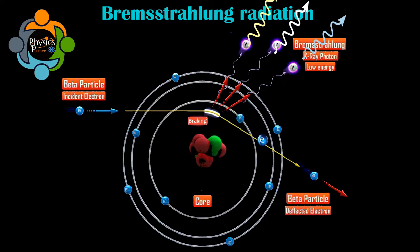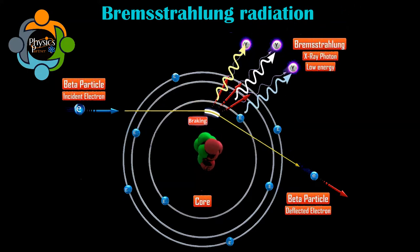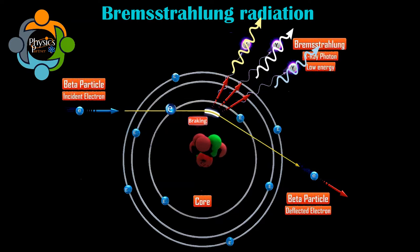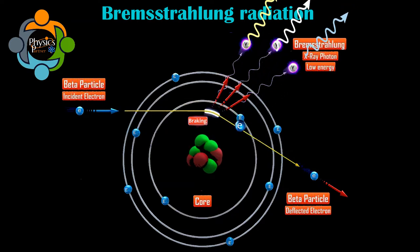Bremsstrahlung radiation is a type of electromagnetic radiation emitted when a charged particle, upon getting deflected by another charged particle, is decelerated. These charged particles are mainly electrons or atomic nuclei. The particles in motion, upon colliding, lose kinetic energy.